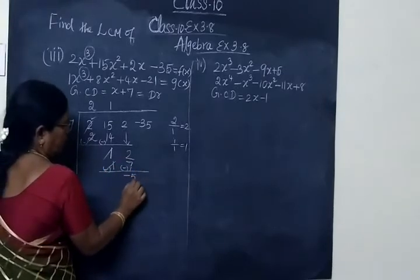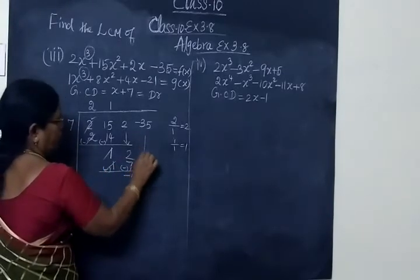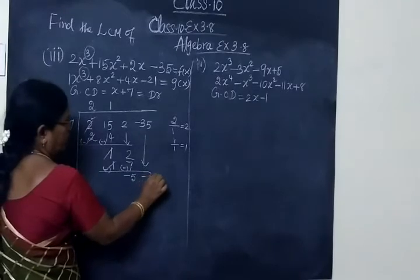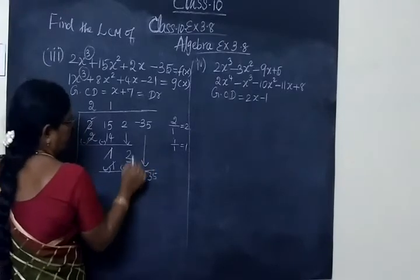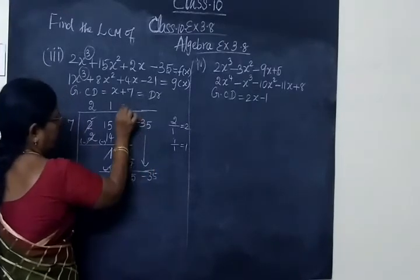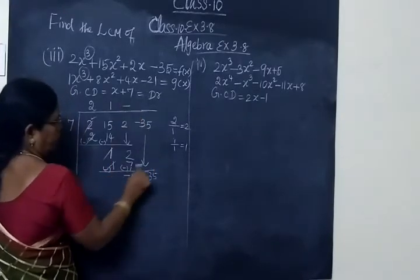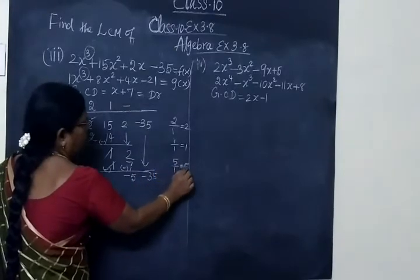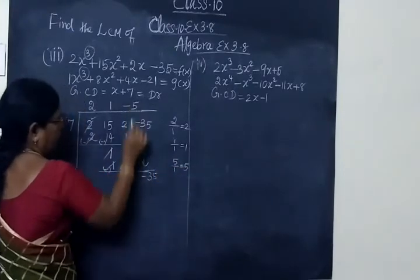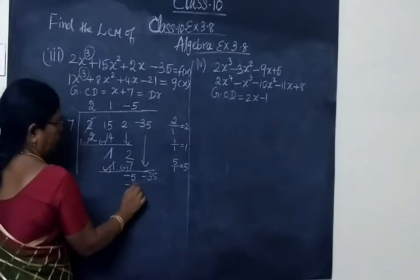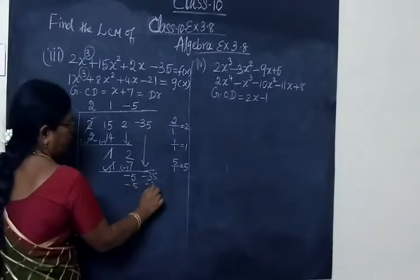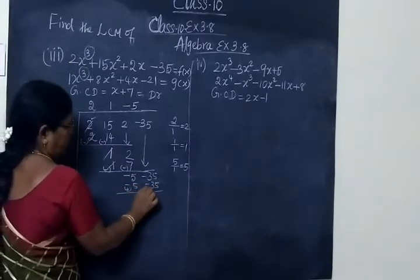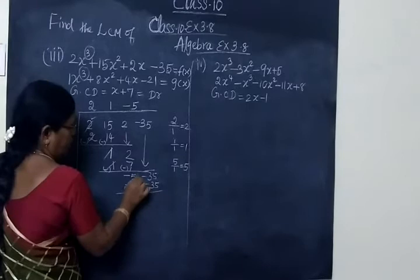The greater number sign is minus. So minus 5. Then bring down minus 35. This is the minus sign, already placed. Here 5 by 1 is 5. So write 5, making minus 5. Minus times minus 35 — if we change the sign, the answer is 0.